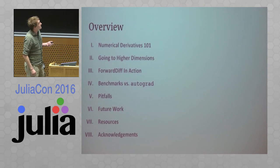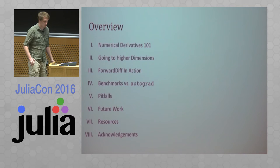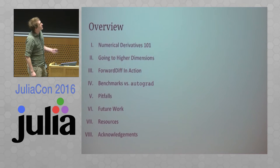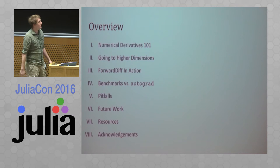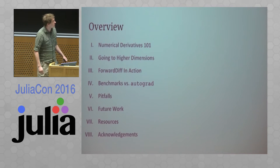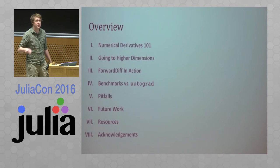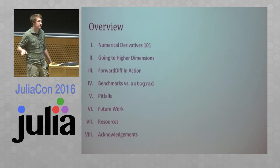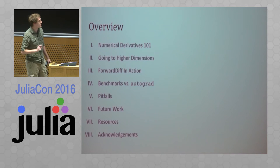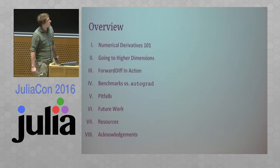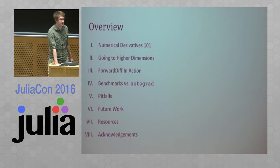I'm going to start off discussing a little bit of the theory and maybe presenting some alternative methods for taking derivatives and explaining why those are not the methods you should use. I'll explain a little bit about the methods that drive ForwardDiff, then talk about the implementation of those methods in Julia. I'll benchmark versus Autograd, which is a popular reverse mode implementation in Python that relies on NumPy. I'll also talk about some pitfalls users run into when using ForwardDiff, and finally the directions I'd like to take the package in the future.